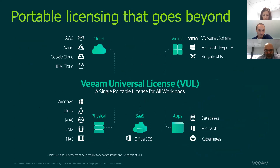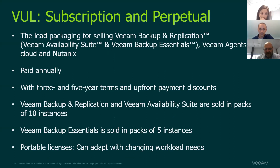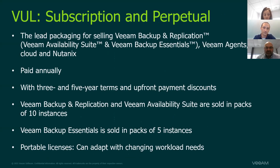Every product — it's just a universal license — whether for backing up a physical workstation or server, apps, virtual workloads on Nutanix, Hyper-V, or vSphere, or your cloud workloads — you can use a Veeam Universal License. At this moment, Office 365 backup is not integrated in the Veeam Universal License. So you can't buy a workstation license or an agent license separately. You need to buy Veeam Universal Licenses for one of three major products: Veeam Backup & Replication, Veeam Availability Suite, or Veeam Essentials.